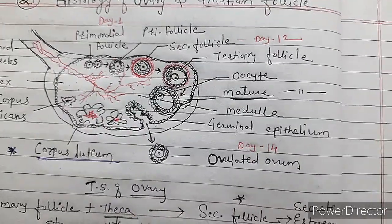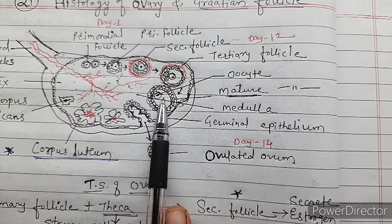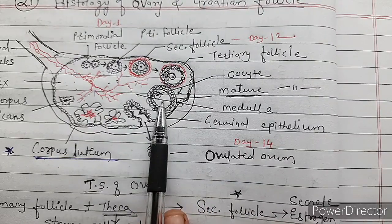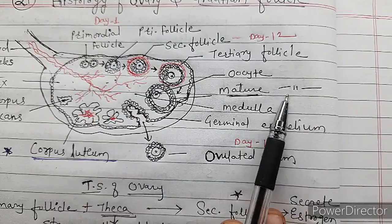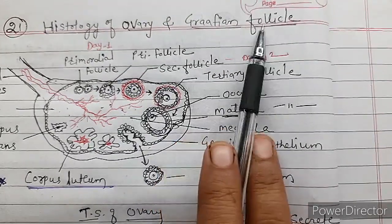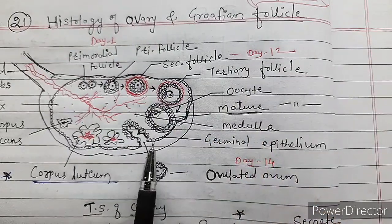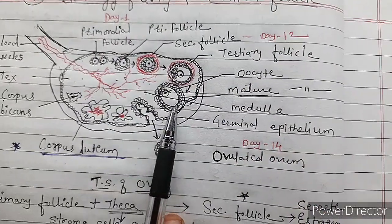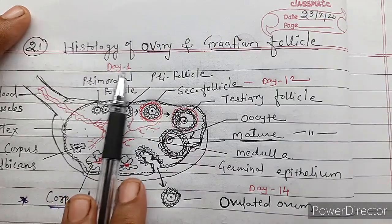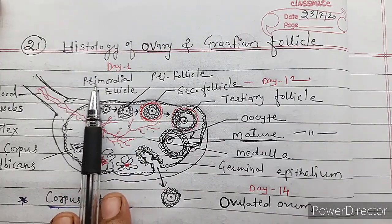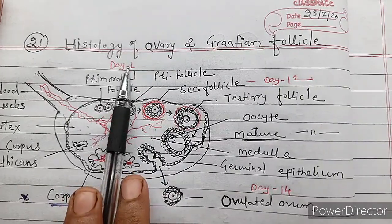The tertiary follicle matures into the mature follicle. The mature follicle is also called the Graafian follicle — remember, Graafian follicle means mature follicle. On the first day, only primordial follicles are present in the ovary.